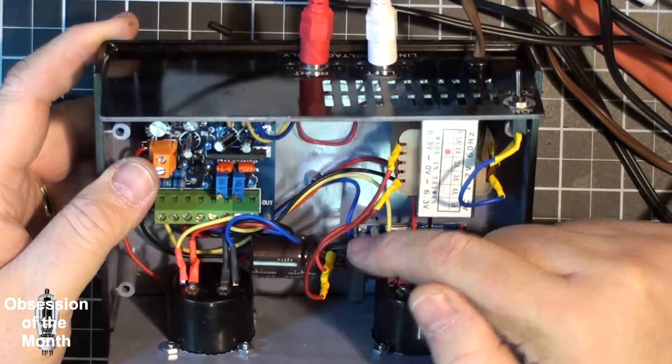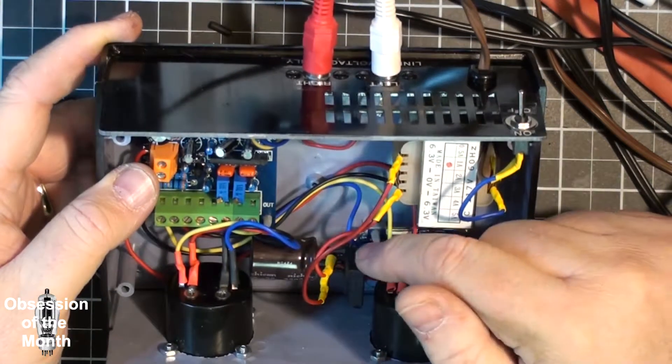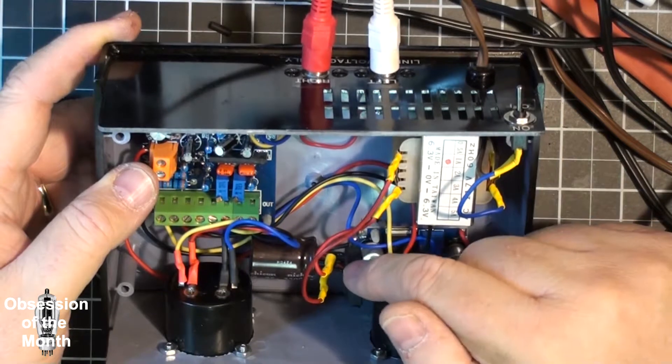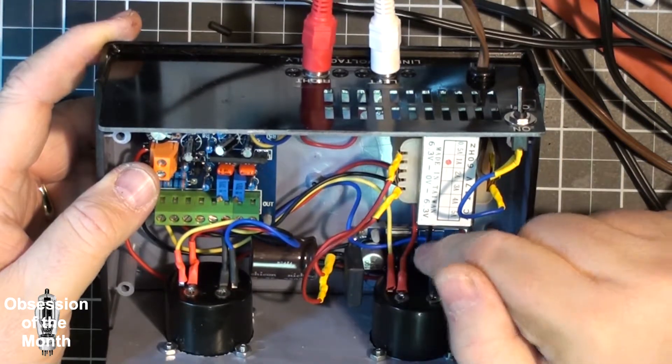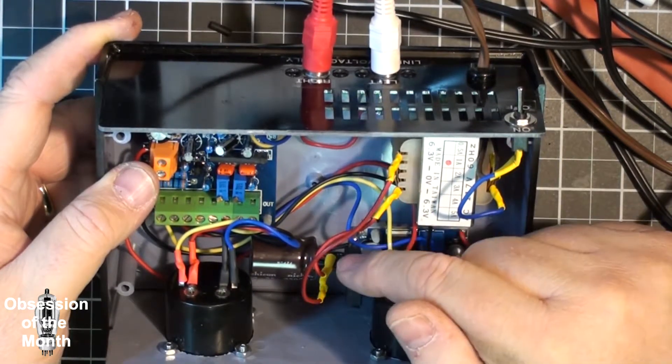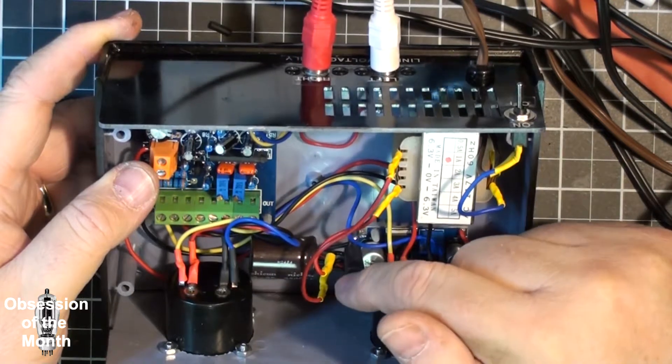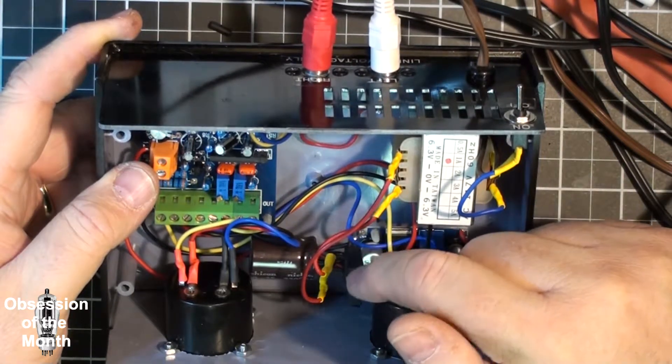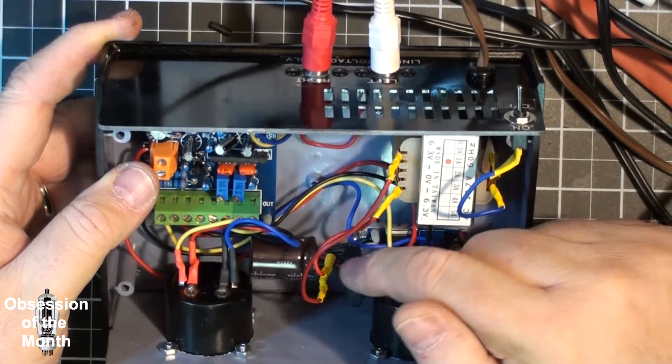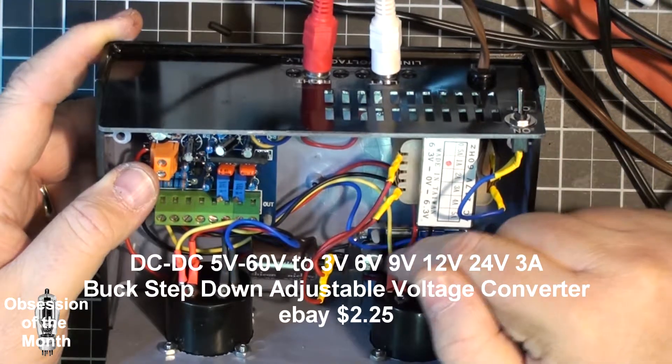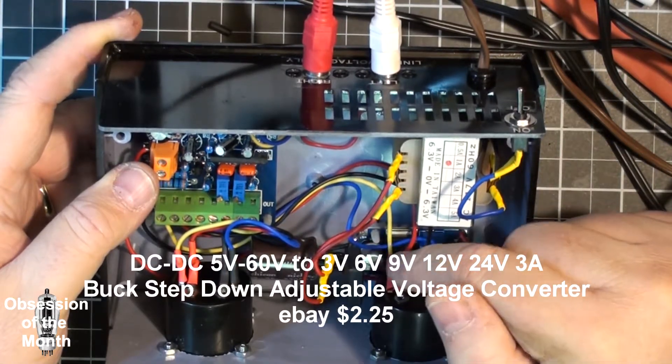I grabbed it because it had really long leads and I could mount it directly to this voltage regulator. So we have AC coming in to the bridge rectifier and then the DC is going out to this buck converter voltage regulator.